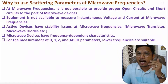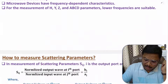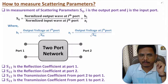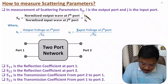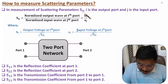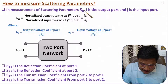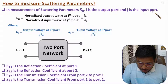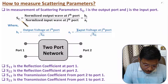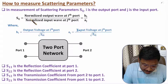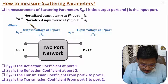For measurement of scattering parameters, there are a few essential notations to remember. We are talking about S_IJ, where I explains the output port and J explains the input port. S_IJ is a ratio of output to input — specifically, it is the normalized output wave at the Ith port divided by the normalized input wave at the Jth port.